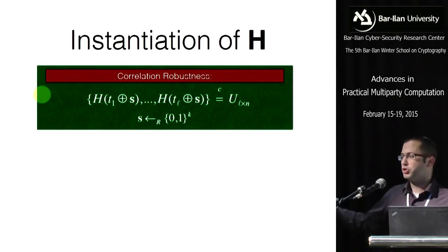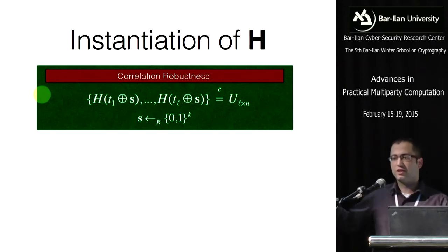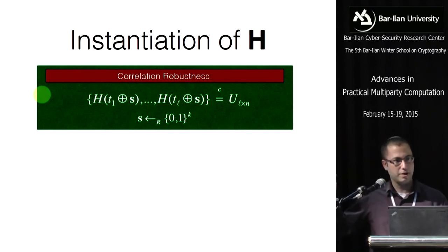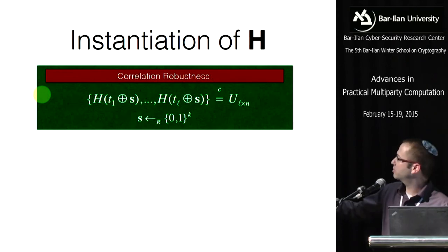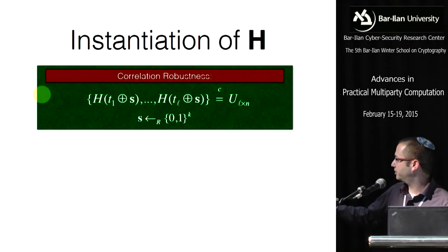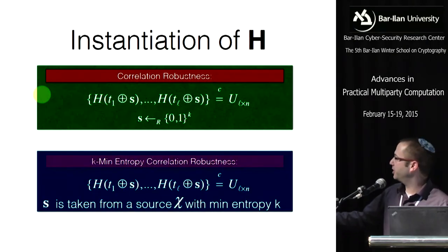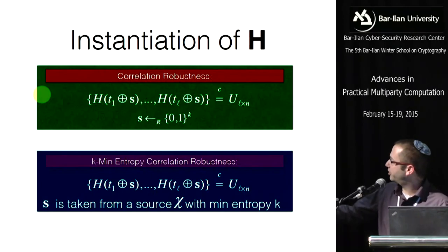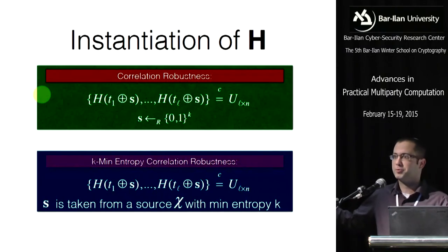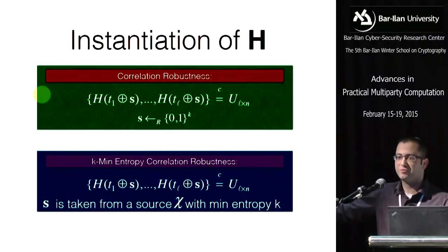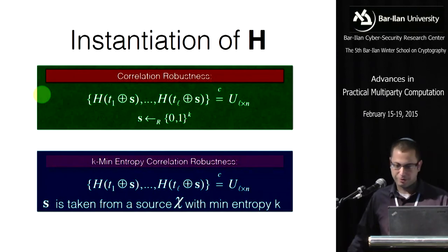Regarding hash functions: we need a slightly stronger assumption than in IKNP. In IKNP, the hash functions rely on correlation robustness where S is uniform. Here we need K-min-entropy correlation robustness, where S is drawn from a source with minimum entropy K rather than being fully uniform. In particular, a uniform distribution over K bits is a valid K-min-entropy source.